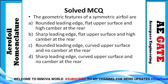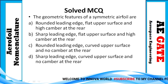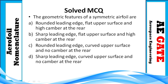MCQ 3: The geometric features of a symmetric airfoil are: (A) rounded leading edge, flat upper surface, and high camber at the rear; (B) sharp leading edge, flat upper surface, and high camber at the rear; (C) rounded leading edge, curved upper surface, and no camber at the rear. A symmetric airfoil always has a rounded leading edge and no camber, so the correct answer is option C.